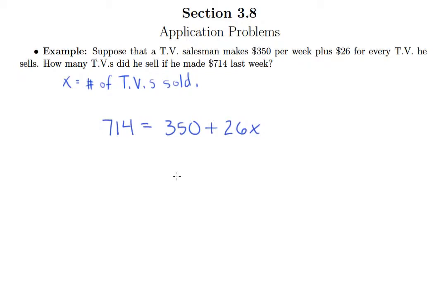So this is the equation we want. And if we can just solve for X, we'll know based on the fact that he made $714, we'll figure out how many TVs he must have sold to do that.